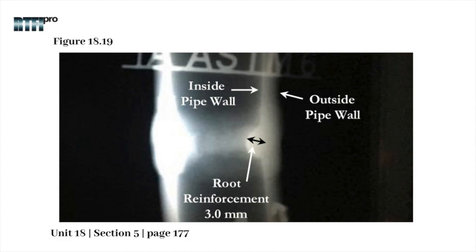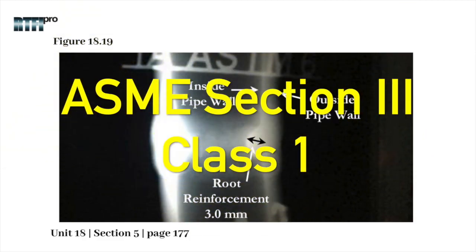In the Figure 18.19 example, there is no evidence of magnification, and with the reinforcement measurement of 3.0 mm, it is therefore rejectable due to the 2.5 mm maximum reinforcement for the applicable code.